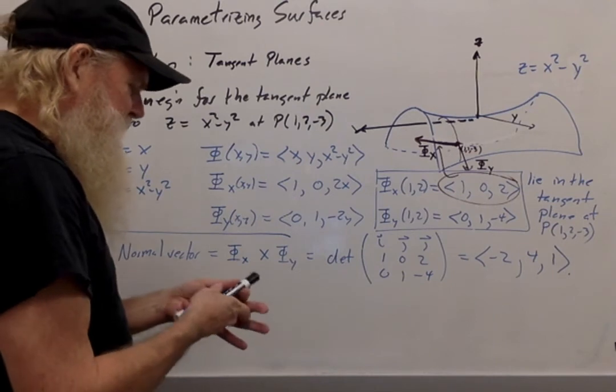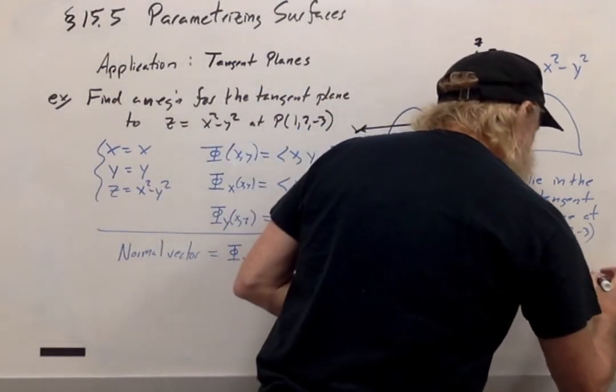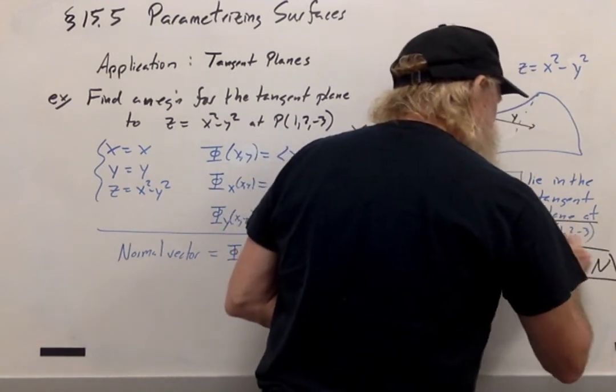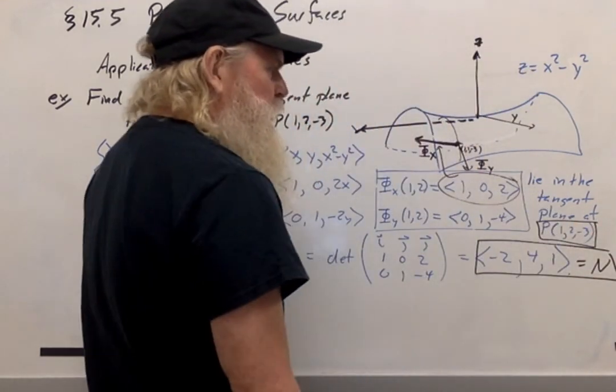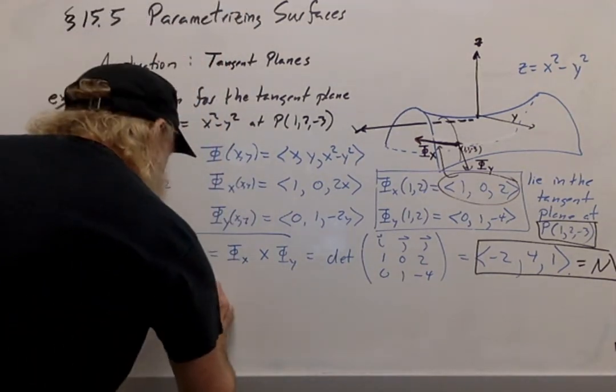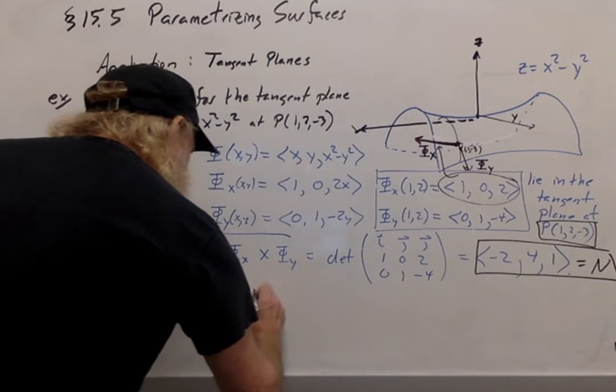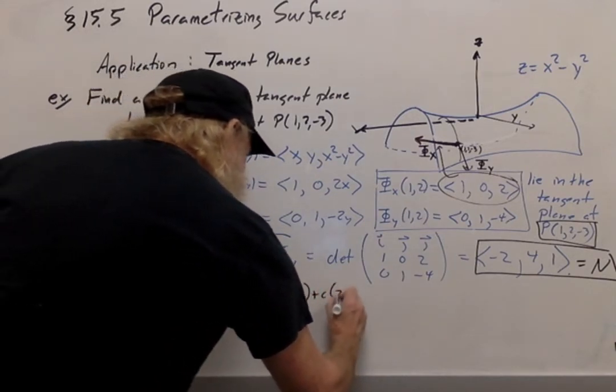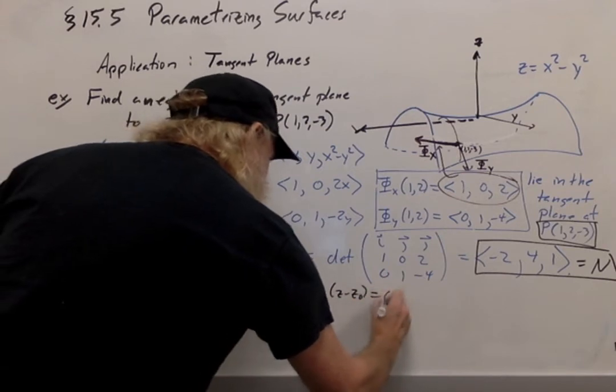So this guy is my normal vector, and this is my point P. So I can use my regular formula for writing the equation for a tangent plane, which is a times (x minus x0) plus b times (y minus y0) plus c times (z minus z0) equals 0.